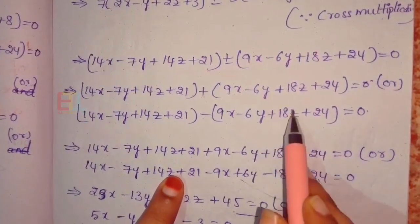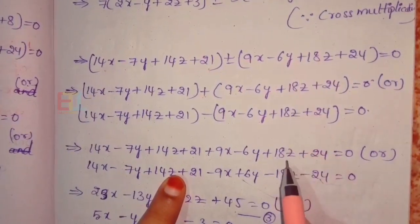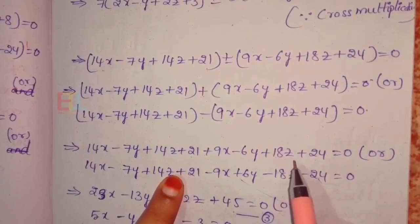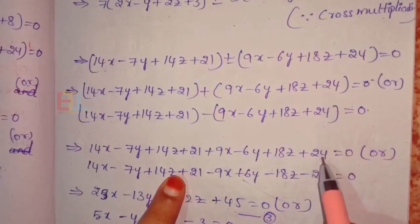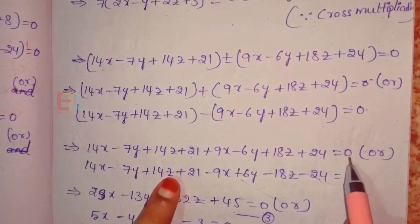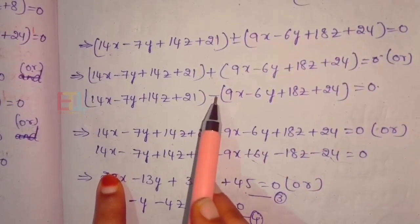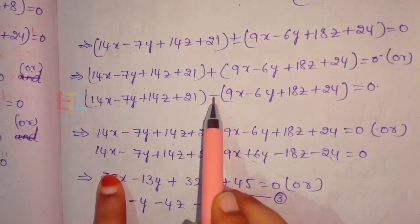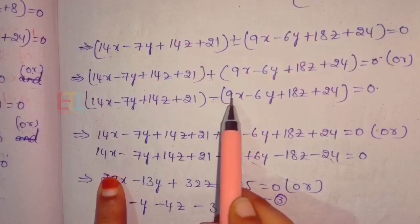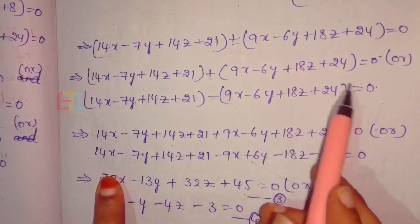Taking minus 6y plus 18z plus 24 equal to 0 — and here we also consider the minus case, which gives minus sign changes.